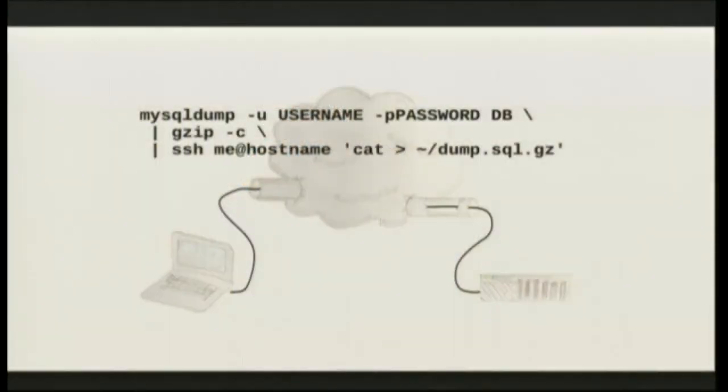Usually what happens next is that the server starts a login shell process for you, and connects the standard input and output of that process to your terminal over the encrypted connection. So now your terminal looks like it's the other machine — on the other side of your desk, other side of the world, whatever. You don't need to open an interactive shell. You can run a command directly on the remote system. And like all good Unix utilities, SSH plays really well with pipes.